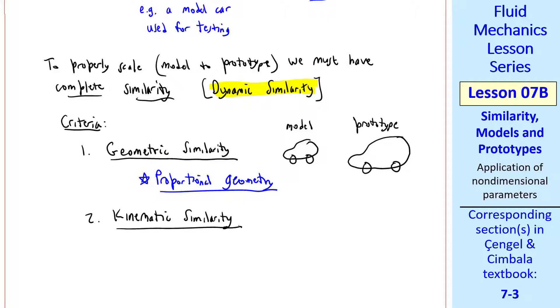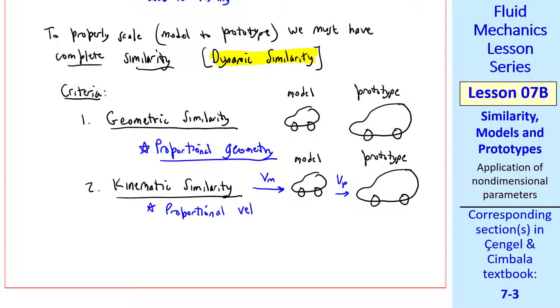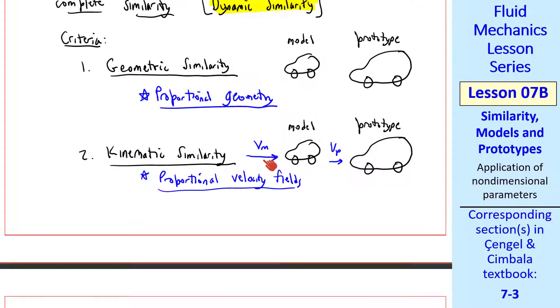Second is kinematic similarity, which means we have proportional velocity fields. Here, the speed approaching the model is proportional to the speed approaching the prototype. And other speeds around the model, such as around the windshield here, are also proportional. If this is one and a half times this, this will be one and a half times this.